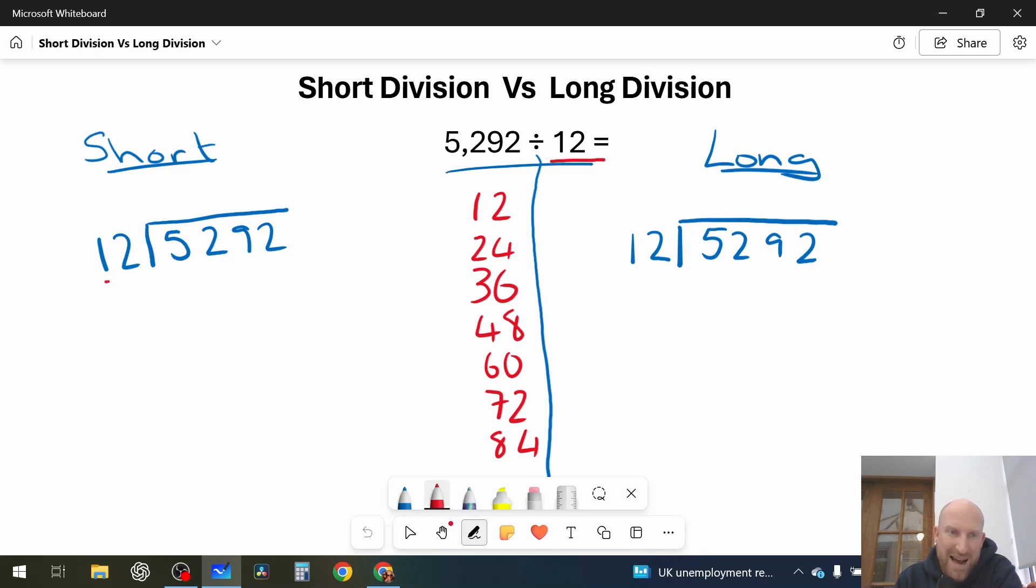So, I'm going to go how many 12s in 52, so that would be 1, 2, 3, 4, and I'm going to put my 4 above just like this. Now, 4 12s is 48, so this is the main difference between short and long division. I have to do a mental calculation now of 52 take away 48, and that gives me 4 remainder, and I put that 4 onto the next number.